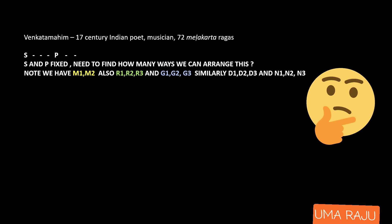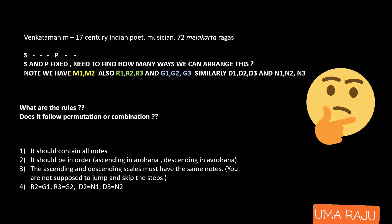Do we have a set of rules? Yes we do, and one more question is: does it follow permutation or combination? The first rule is it should contain all notes — I should not leave anything blank. The second rule is it should be in order: after Sa, only Ri should come (Ri1, Ri2, or Ri3), then Ga must follow Ri. Arohana means the order must be ascending. Also, you cannot skip a note — from Sa you cannot jump to Ga skipping Ri, since sampurna raga means everything must be there.